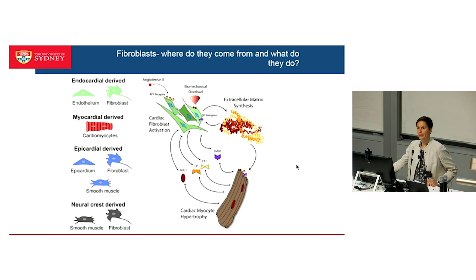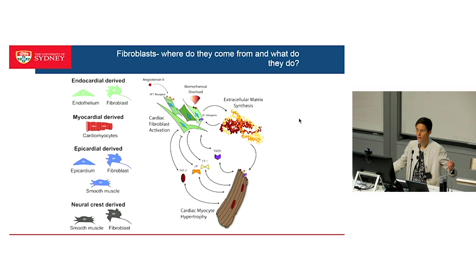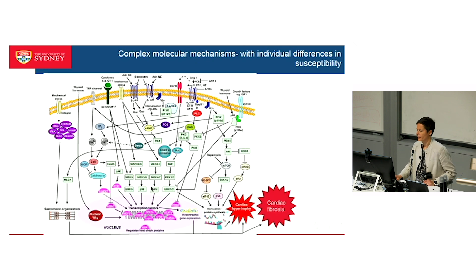So this is taking you back to a cellular level. Cardiac fibroblasts actually come from a number of different sources, both the endocardium and the epicardium. With both biochemical overload as well as the neurohormonal abnormalities that we see in our patients, we activate these cardiac fibroblasts and they not only generate collagen 1 and collagen 2, both in the interstitium, focally and around the actual vessels themselves, but they also have crosstalk with the cardiac myocyte that actually influences the outcome. And different individuals are very different in the way they actually activate this.